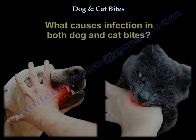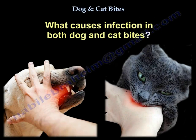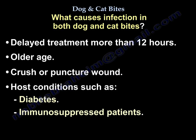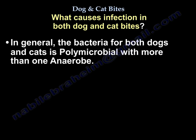What causes infection in both dog and cat bites: delayed treatment more than 12 hours, older age, crush or puncture wounds, and host conditions such as diabetes or immunosuppression. In general, the bacteria for both are polymicrobial with more than one organism.